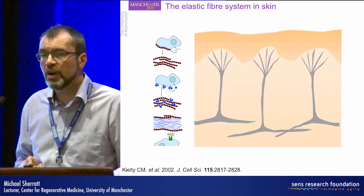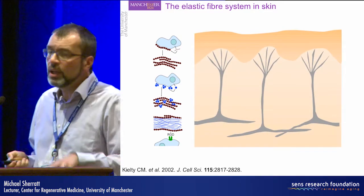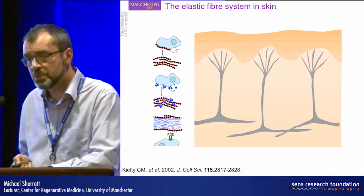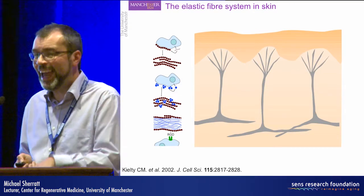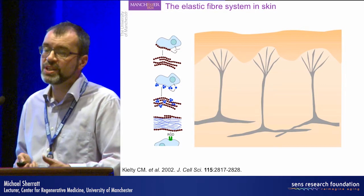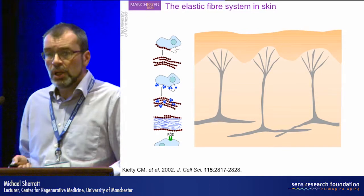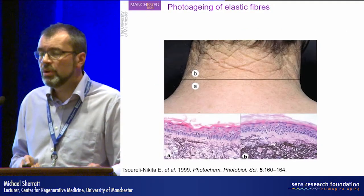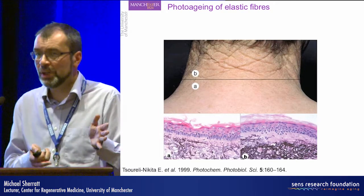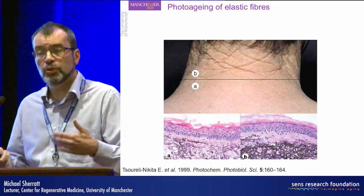Over 20% of the microfiber mass was lost. So if these fibrillin microfibrils that are rich in chromophores are susceptible to ultraviolet radiation, can we use amino acid composition as a way of predicting relative susceptibility of proteins to UV? We took publicly available amino acid sequences and ranked 49 of the major dermal extracellular matrix components according to their UV chromophore content.